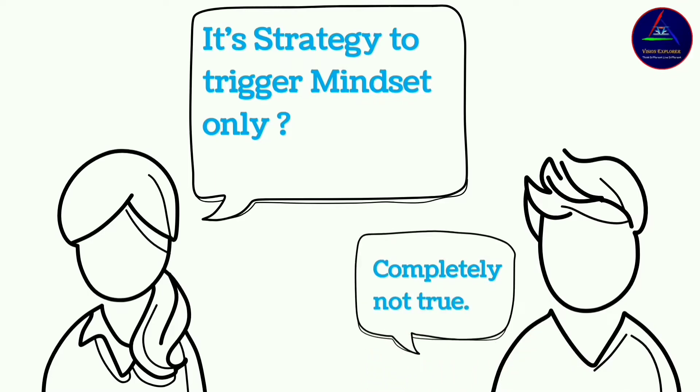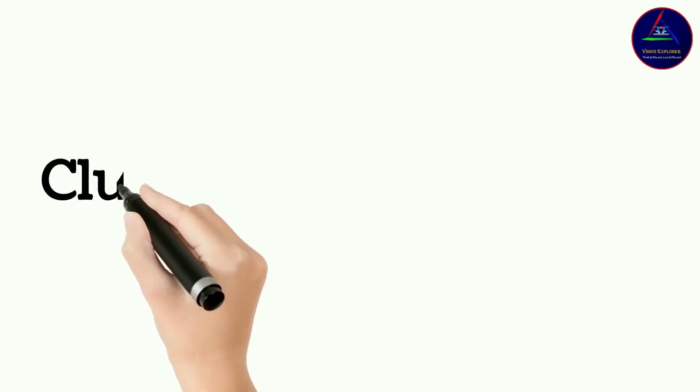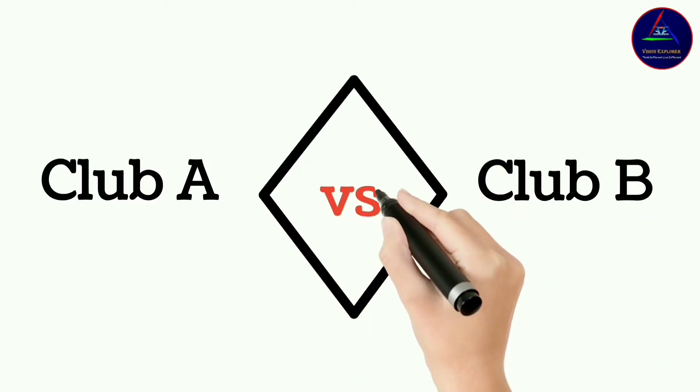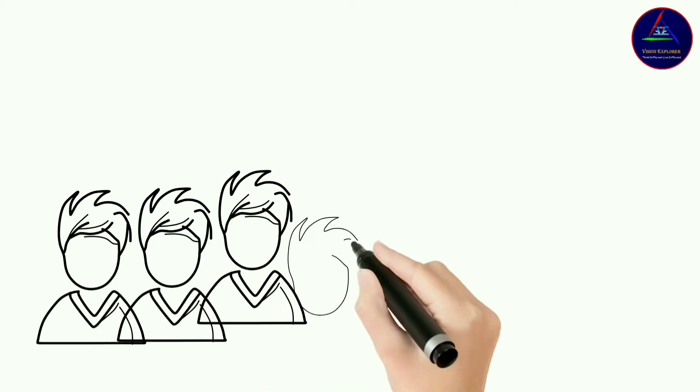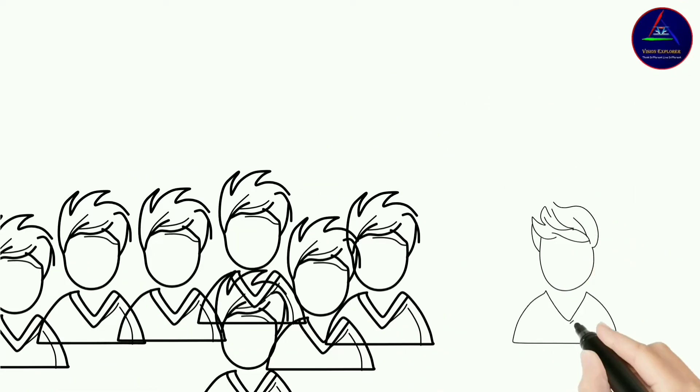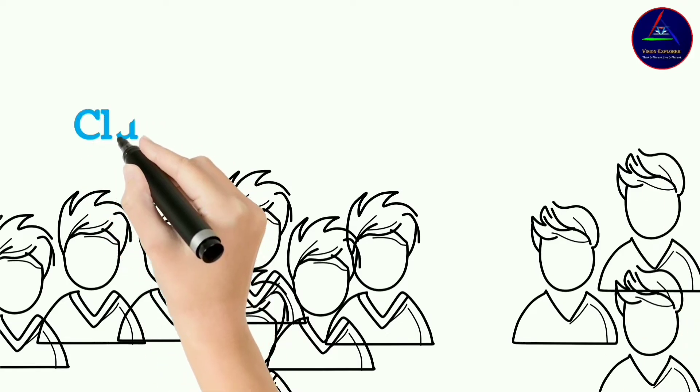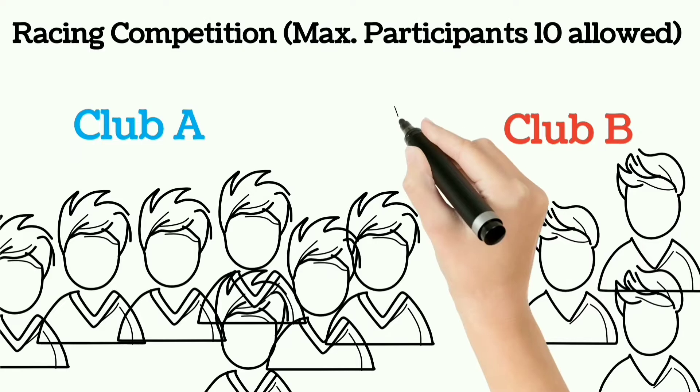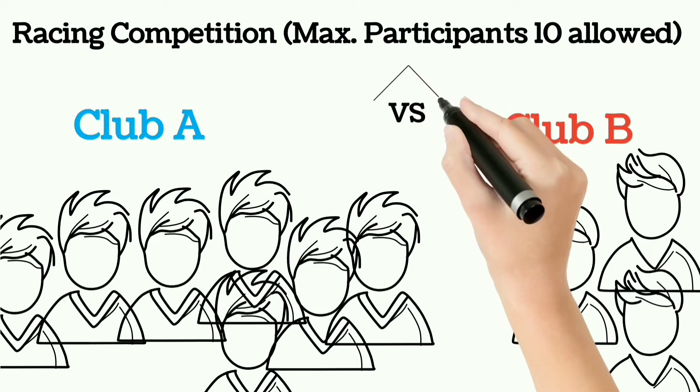Suppose there are two clubs for racing, they both want to participate in a racing competition and that race allows only 10 participants. Let two clubs are Club A and Club B. Let's say Club A provided 7 participants and Club B provided only 3 participants. So here mathematically, probability for winning the competition is higher for Club A. But in real life, it also depends on the running ability of a racer.